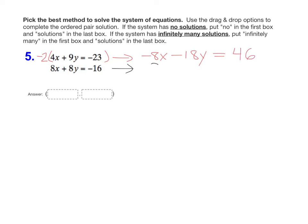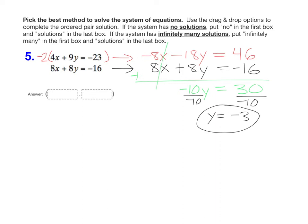The second equation, I'm going to keep it the same because I just made my variables opposites. Notice how the x's now are opposites. When we add these two equations together, negative eight x and positive eight x eliminate. Negative eighteen plus eight is negative ten y, and forty-six plus negative sixteen would be thirty. Now we're one step away. If we just divide by negative ten on each side, we end up with y equals negative three, which is the first part of our answer.